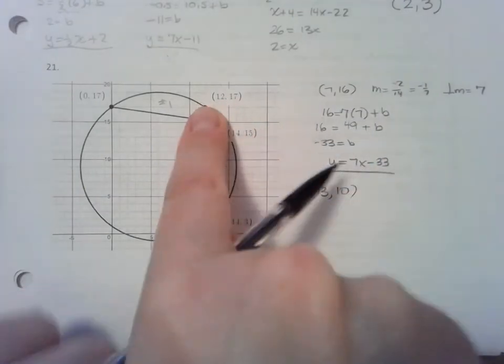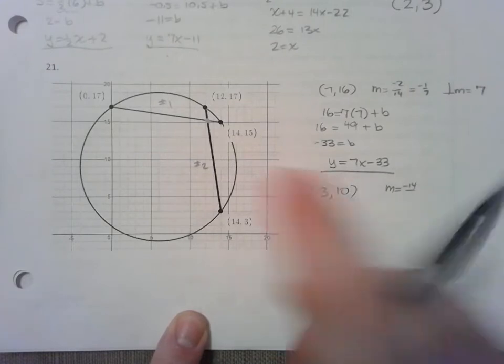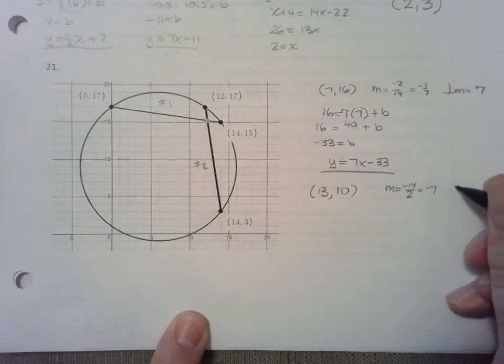The slope goes down 14 and right 2. The original slope is negative 7. The perpendicular slope is positive 1 7th. Okay, fractions.